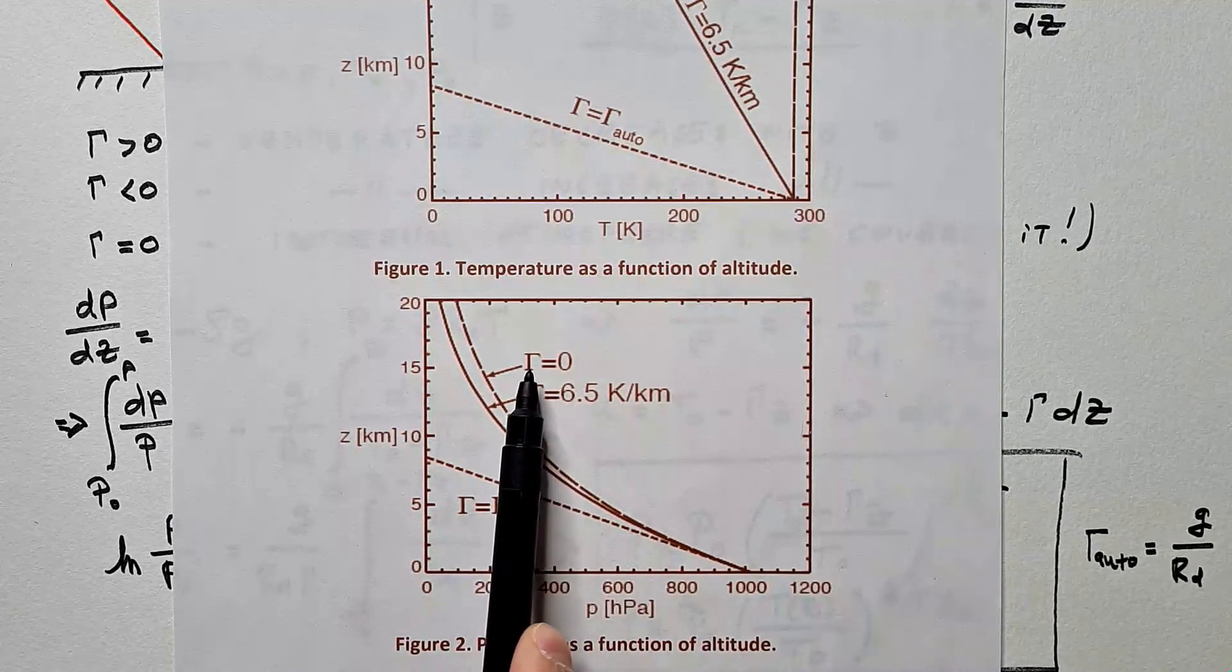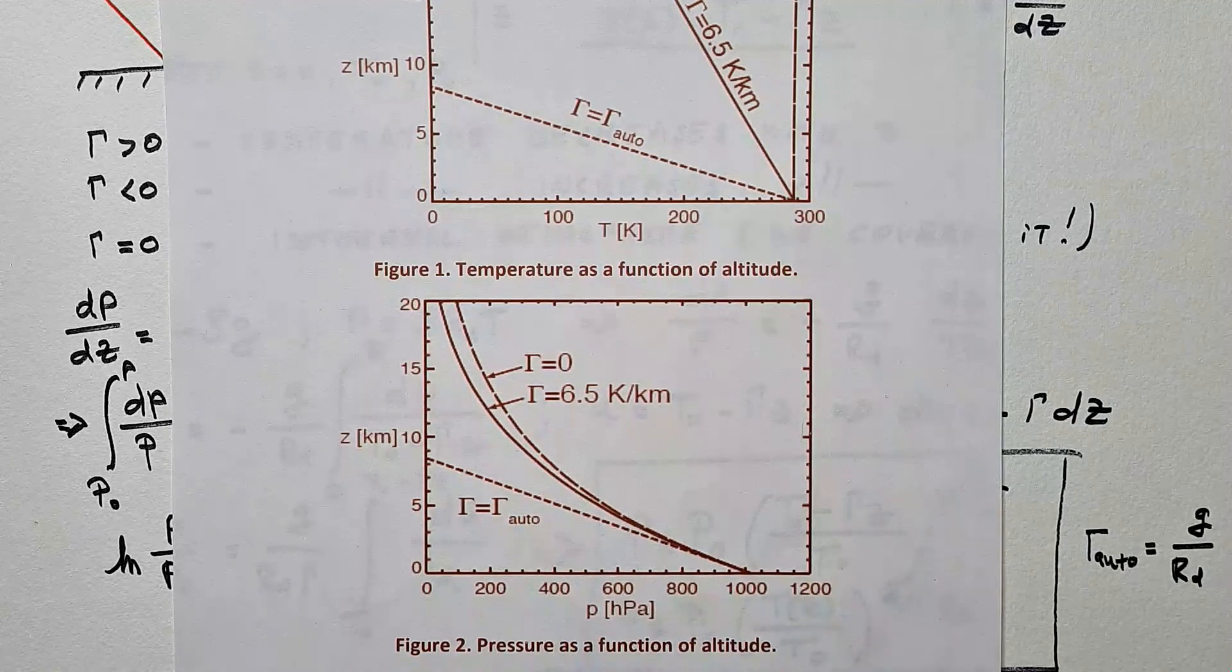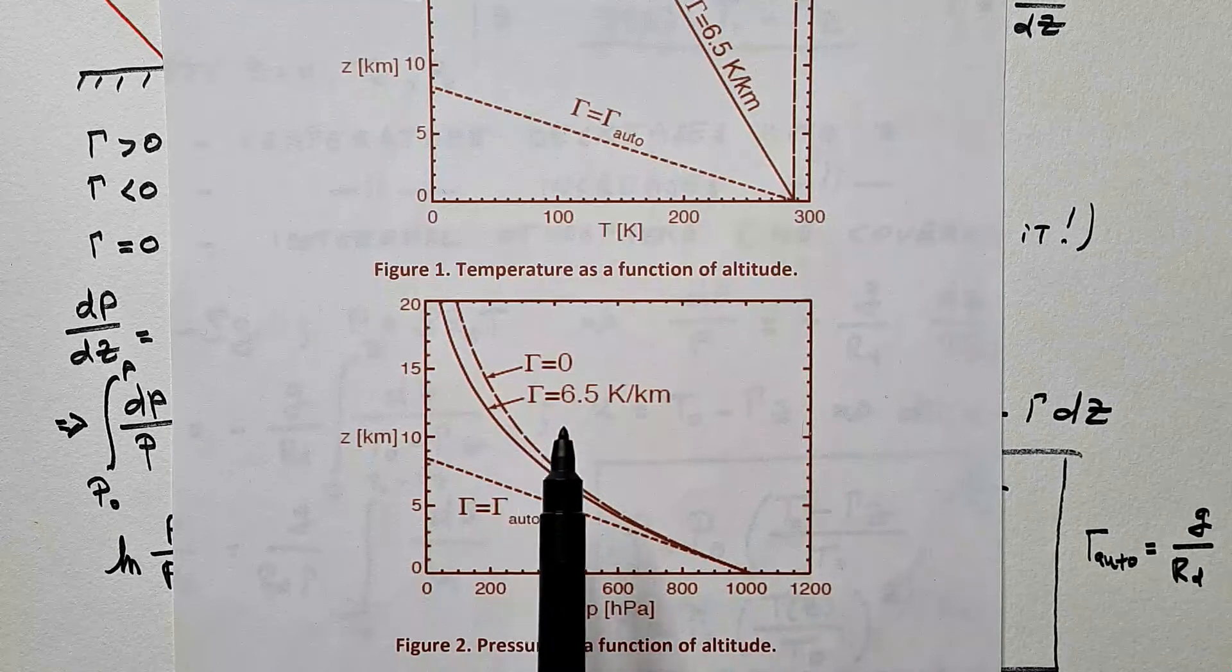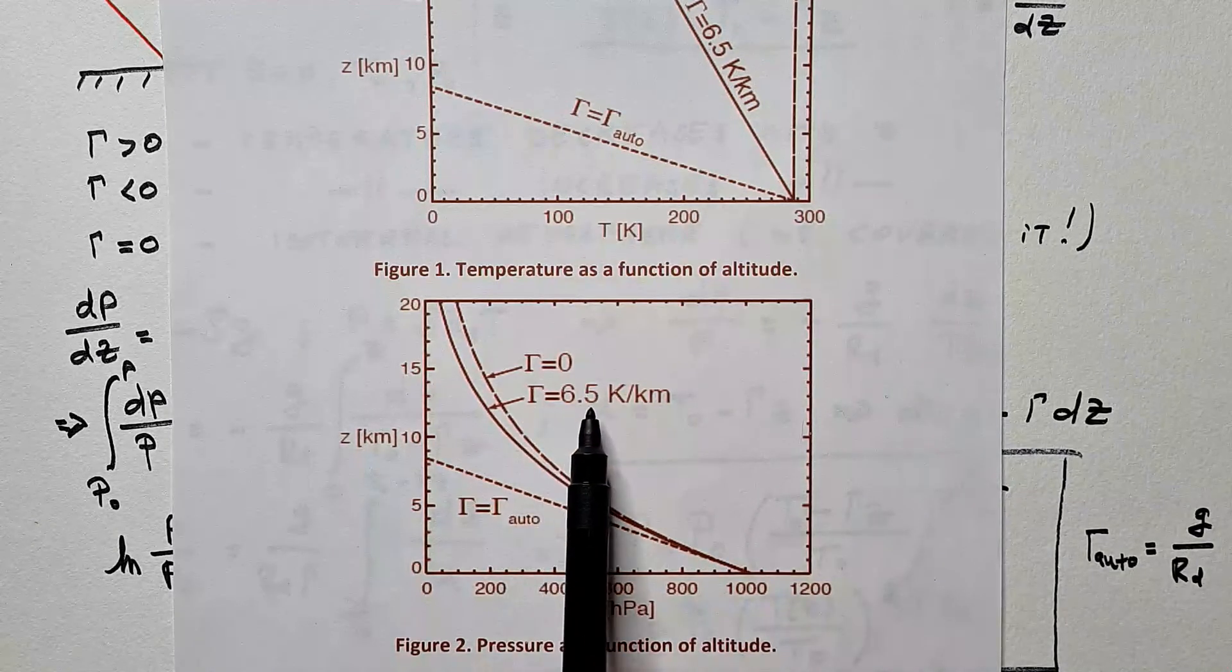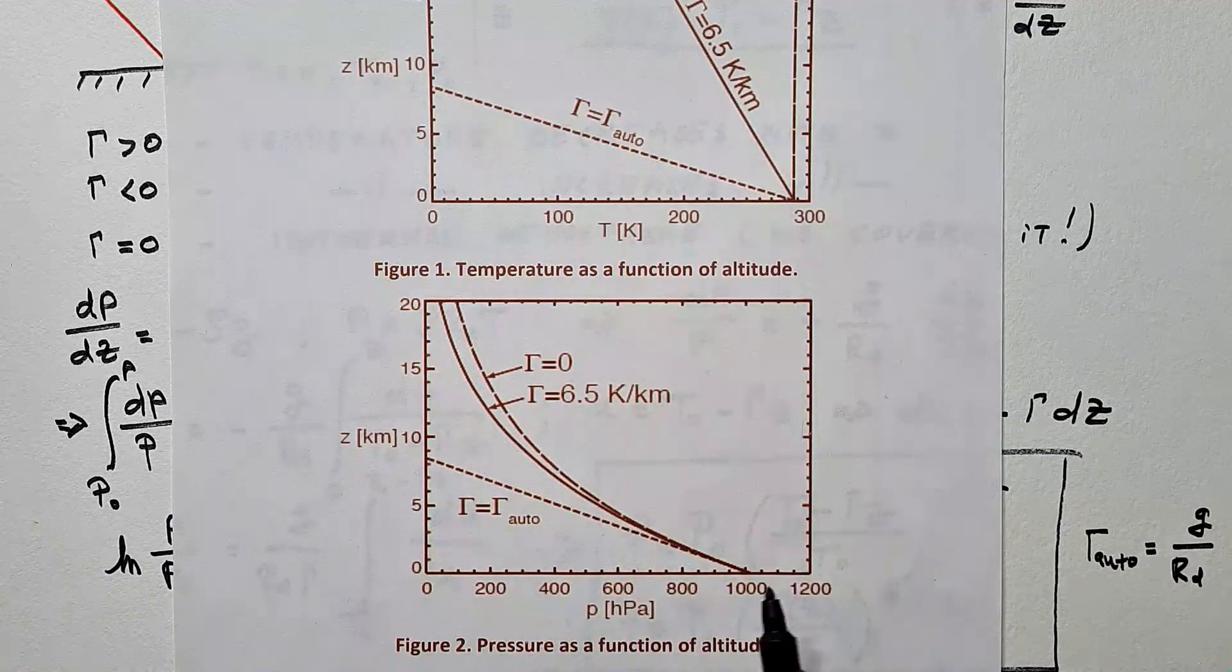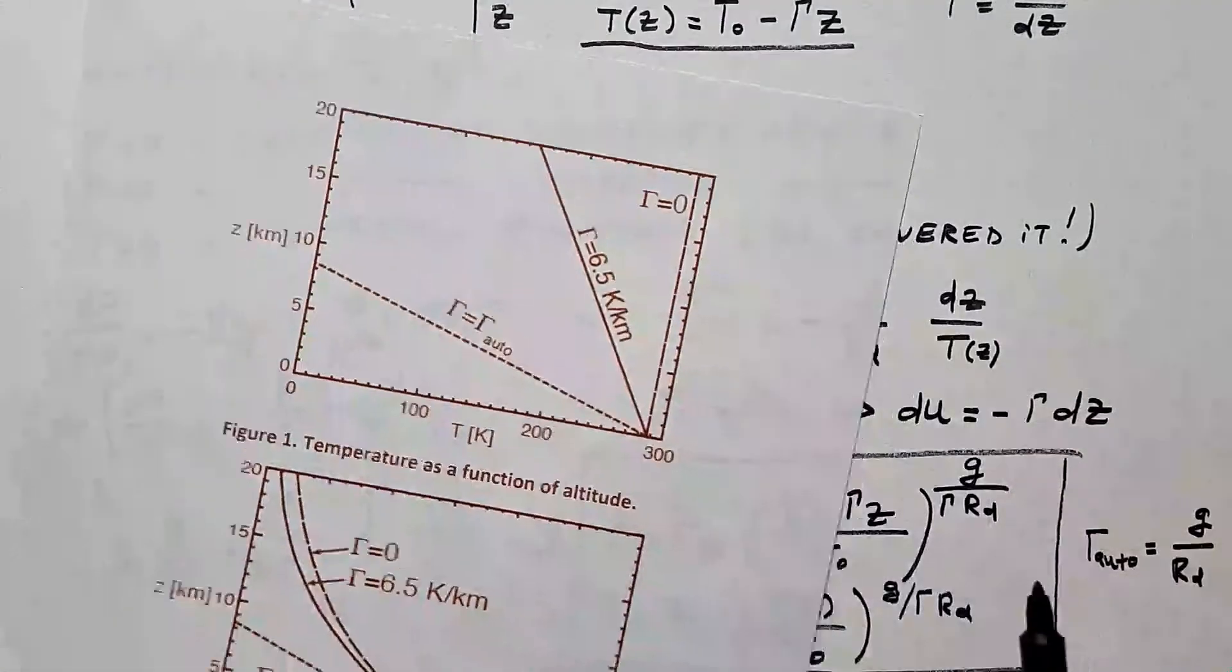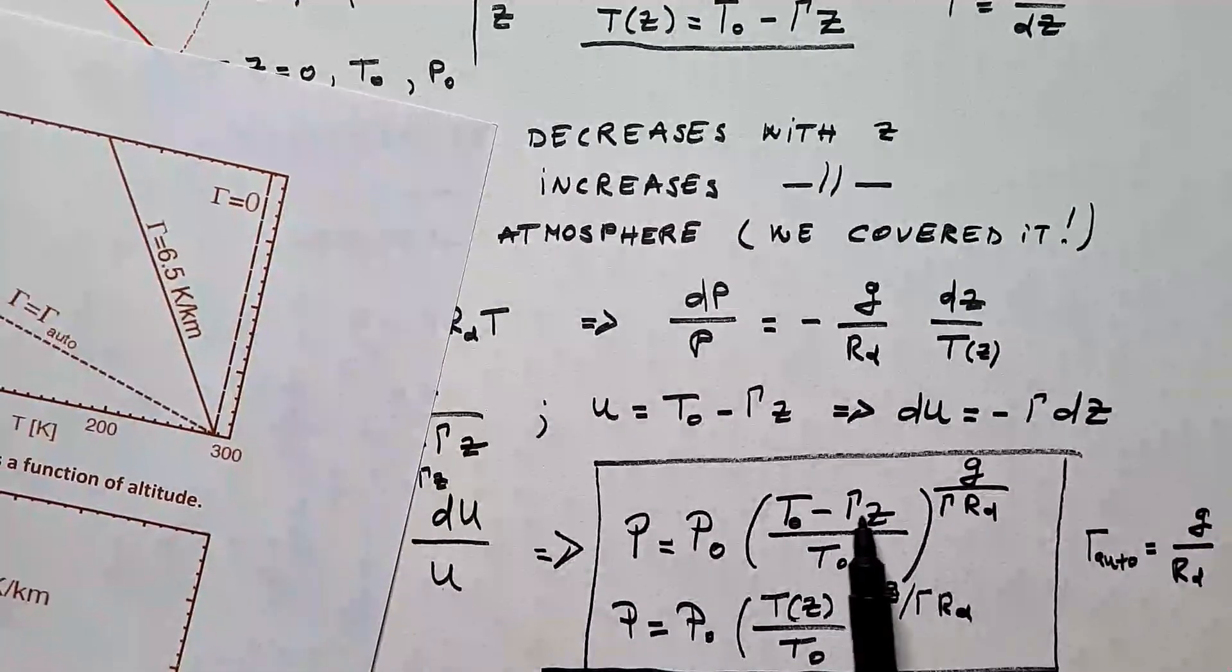If we have isothermal atmosphere, we saw many times it is exponential decrease following natural base. And if we have constant lapse rate, for example, 6.5 Kelvins per kilometer, then pressure also decreases with height, but following this power law that I derived here.